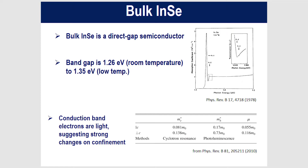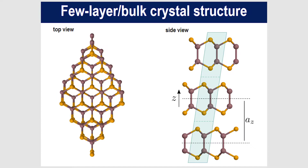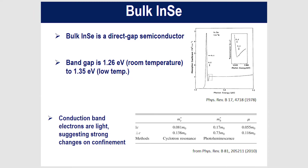The bulk crystal is a direct gap semiconductor with a band gap of around 1.3 eV, and you get very nice excitonic resonances in absorption with a binding energy of about 15 meV — relatively small in the bulk. Surprisingly, the conduction band electron effective masses out-of-plane (along Z) are lighter than those for electrons moving in-plane.